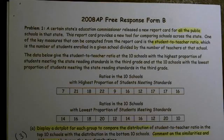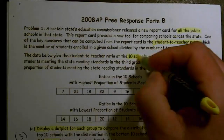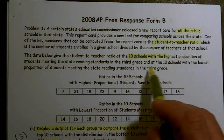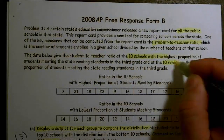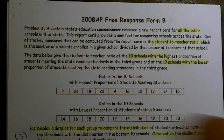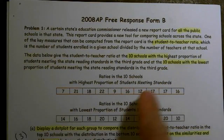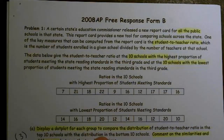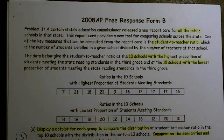The data below give the student-to-teacher ratio at the 10 schools with the highest proportion of students meeting the state reading standards in third grade, and at the 10 schools with the lowest proportion of students meeting the state reading standards in third grade. Display a dot plot for each group to compare the distribution of student-to-teacher ratios in the top 10 schools with the distribution in the bottom 10 schools, and comment on the similarities and differences.